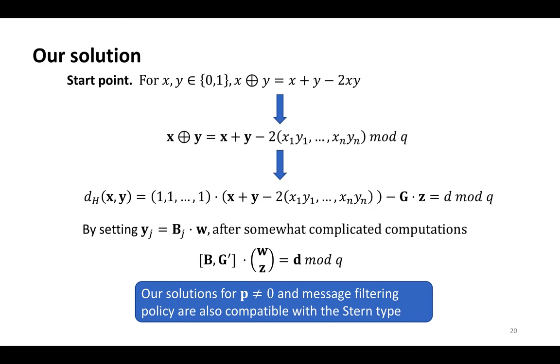Our concrete solution is like this. Our starting point is: for any bit x, y, the XOR operation is equal to the later equation. When they generalize it into the sense of vectors, it looks like this. Then it is used to write the desired relationship as this equation. Now, by setting yⱼ as the product of Bⱼ and w, and after taking somewhat complicated computations, we obtain the final equation, where Bⱼ are public matrices and d is a public vector, whereas w and q are secret vectors. It means that when one wants to prove that w is complying to the prohibited type, it only needs to prove that it satisfies such an equation. We note that our solution for p not equal to zero and message filter policy are also compatible with the Stern type.